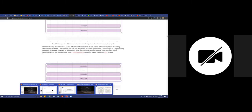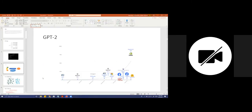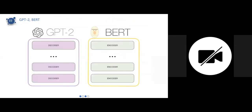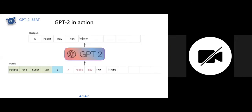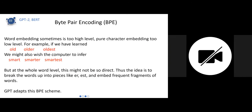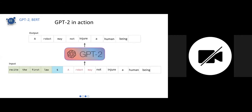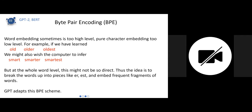GPT-2 went one step ahead using the power of the transformer. Whatever output is predicted by GPT-2 is also given back as input, and it uses this combined input to predict the next output.